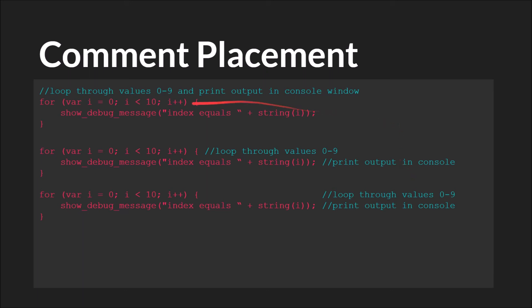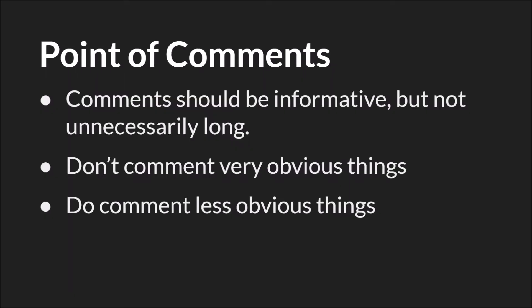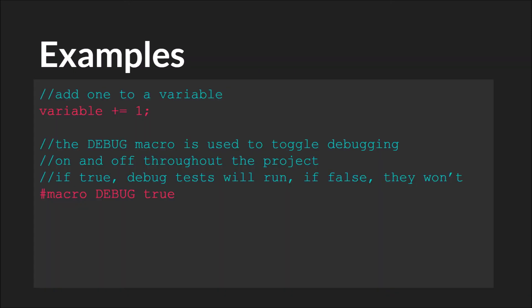To write a comment in code, you use forward slash forward slash. Comments should be informative but not unnecessarily long. You shouldn't comment on very obvious things, but you should comment on less obvious things. For example, a comment that just restates what the code literally does is completely unnecessary — simply reading the code tells you the same information. However, a comment explaining that a debug macro can be toggled on and off to run tests throughout the project is much more helpful.